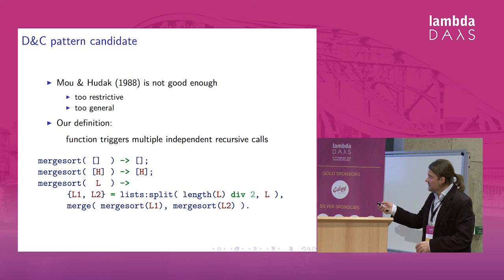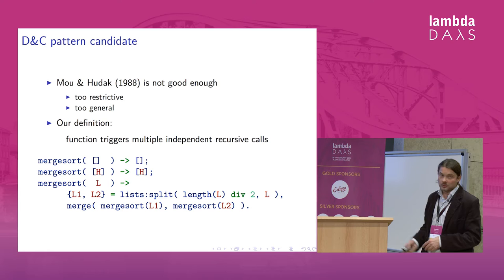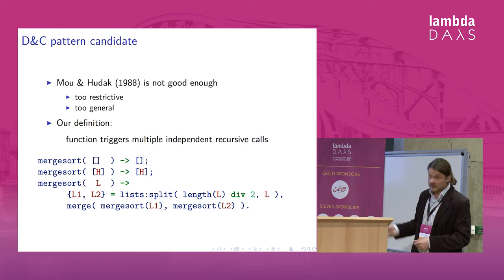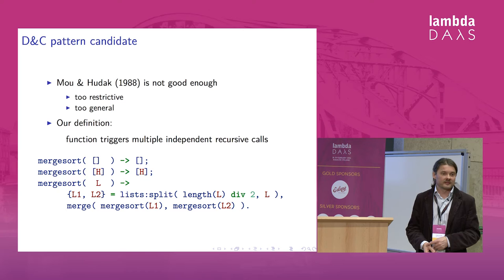In this merge sort, in the body of merge sort, I directly call merge sort twice. And these two calls have arguments, L1 and L2, which do not depend on each other. They were computed from L, the input, but the first call of merge sort does not depend on the result of the second call and vice versa. So this is the thing that we are trying to find in the code.